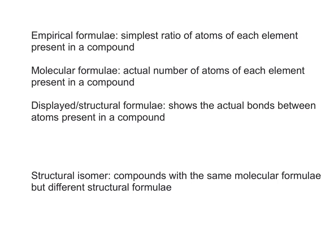Our first definition is for empirical formulae. Remember that this is the simplest ratio of atoms of each element present in a compound. Now molecular formulas are similar, but the difference here is that they are the actual number of atoms of each element present in a compound, and I'm going to use an alkene as an example. The alkene I'm going to choose is butene C4H8, and I'm going to highlight the difference between an empirical formula and a molecular formula.